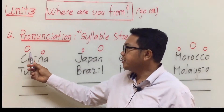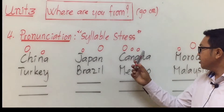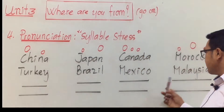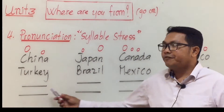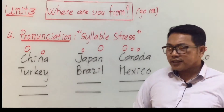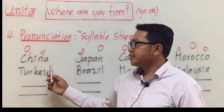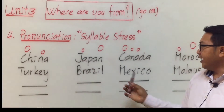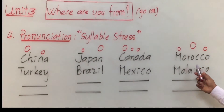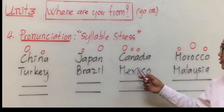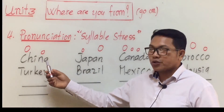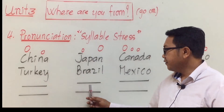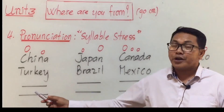The big circle shows where the stress goes up. Remember the eight countries we just covered. Now your task is to find other countries: ones with two syllables where the stress is at the beginning, at the end, and ones with three syllables where the stress is at the beginning or in the middle. Find eight more countries and fill them in.